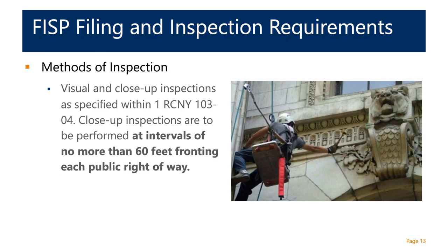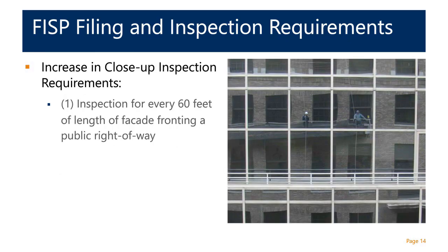New as of February 2020 — cycle nine — these close-up inspections are now required to be performed at intervals of no more than 60 feet at each public-facing facade. This is a new requirement as of this year. Previously, it was only necessary to perform a minimum of one drop inspection on a street-facing facade.